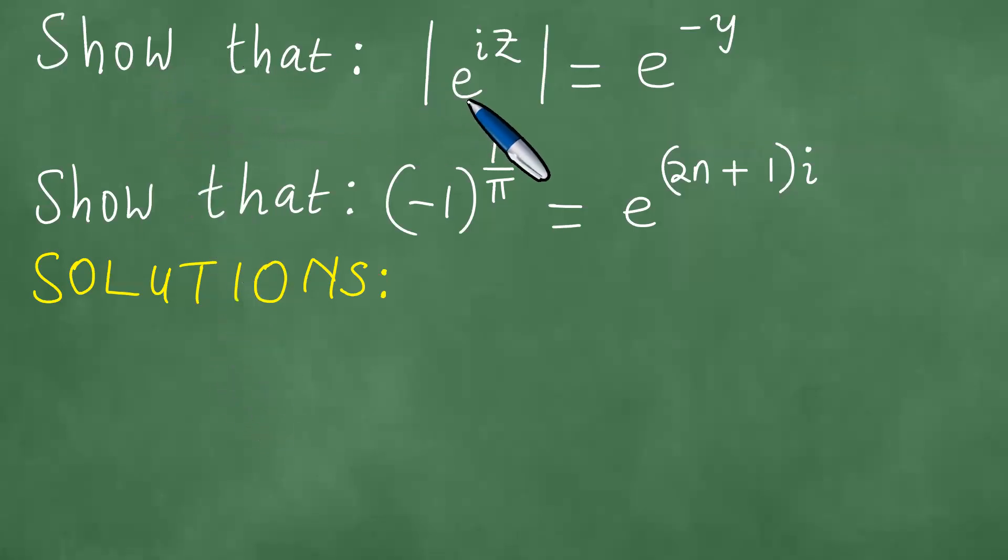Right, obviously we need to show that the modulus of e to the power of iz equals e to the minus y, and need to show that minus 1 to the power 1 over pi equals e to the 2n plus 1 in brackets i. Okay, to prove this, we actually begin as follows, so we are going to be showing that.